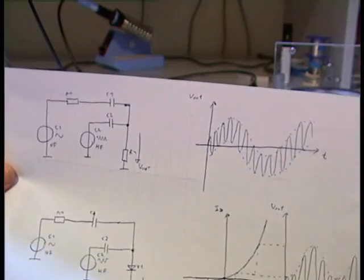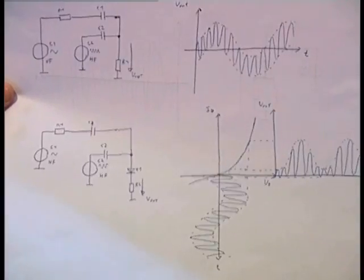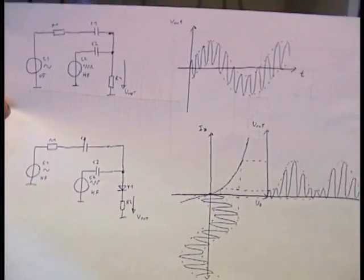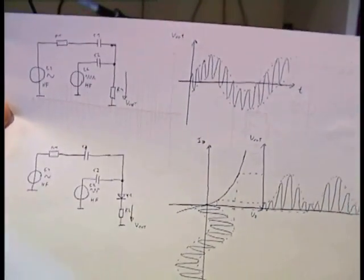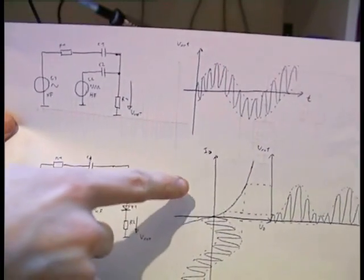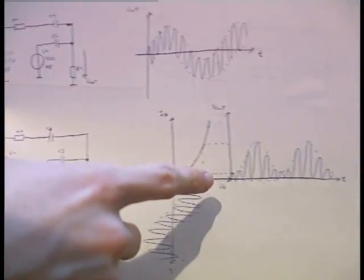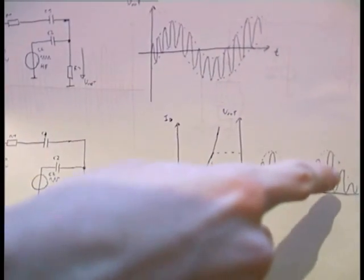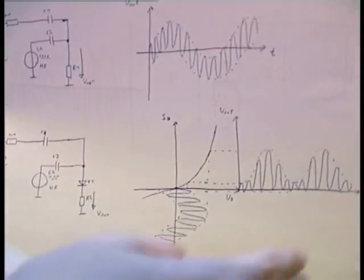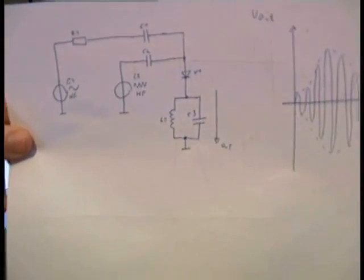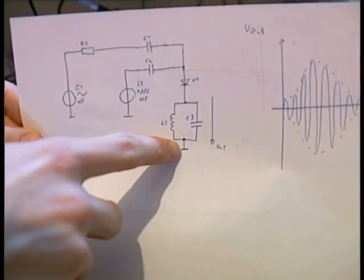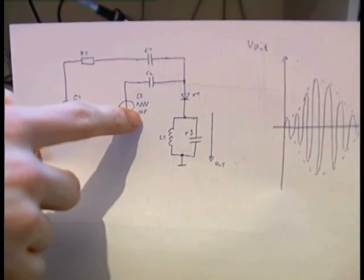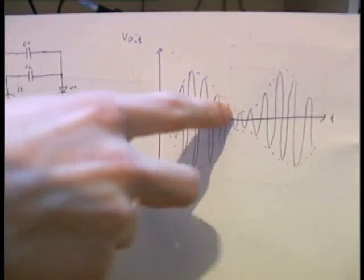But we want a modulated signal, and for this we need a nonlinear component with a nonlinear characteristic, like a diode. Now we are also combining both signals together here, but on the characteristic of the diode the combined signal goes this way and then we have an amplitude modulated signal — not absolutely amplitude modulated but half amplitude modulated. To get the complete signal we take an LC resonance circuit, whose resonance frequency must match the HF signal frequency.